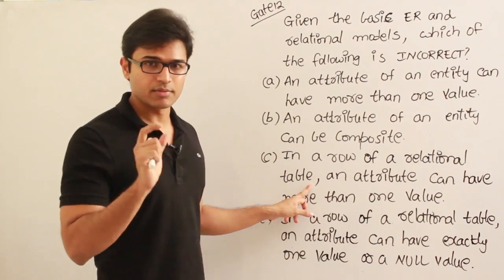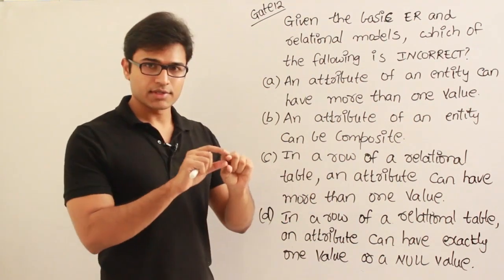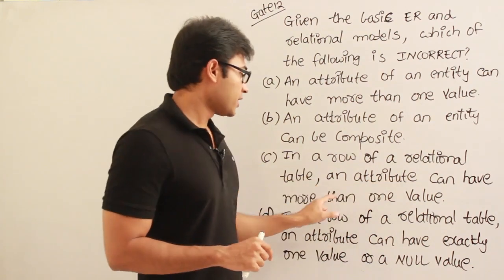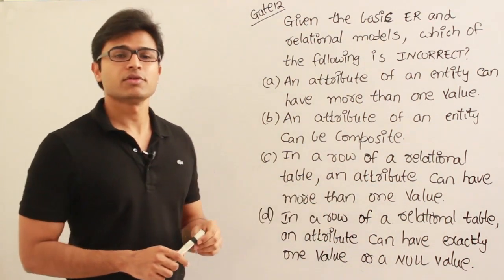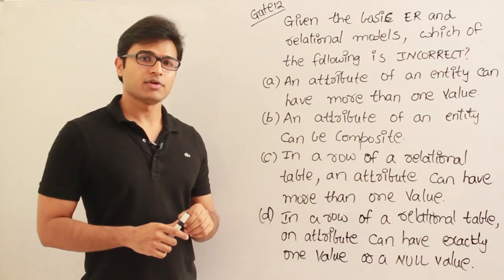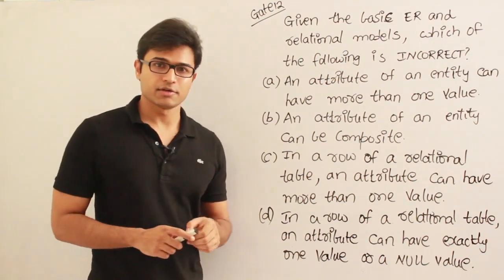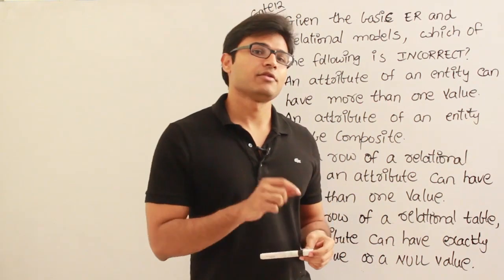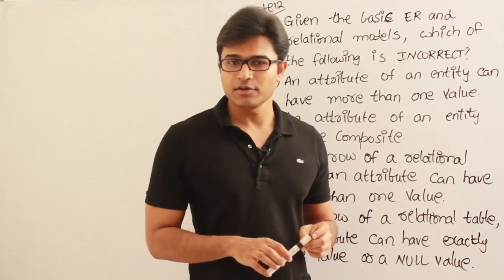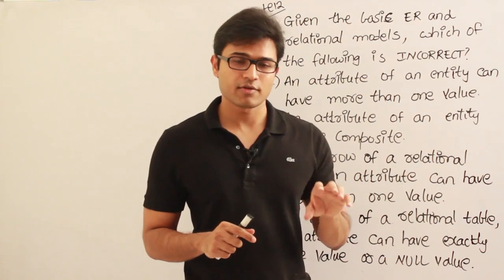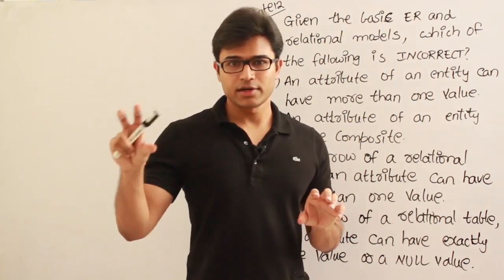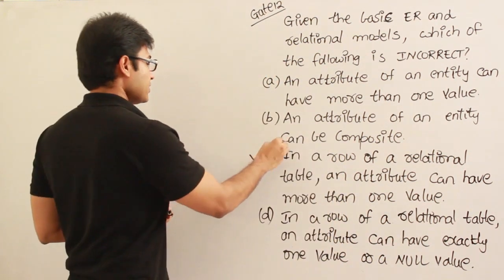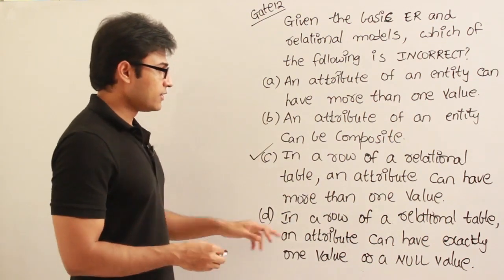Now option C talks about a row of a relational table — so they are now referring to the relational database, i.e., the tables. It asks whether an attribute can have more than one value in a relational table. In a relational table, only single-valued attributes are allowed; multi-valued attributes are not allowed. If you have a multi-valued attribute, you must create a separate table.